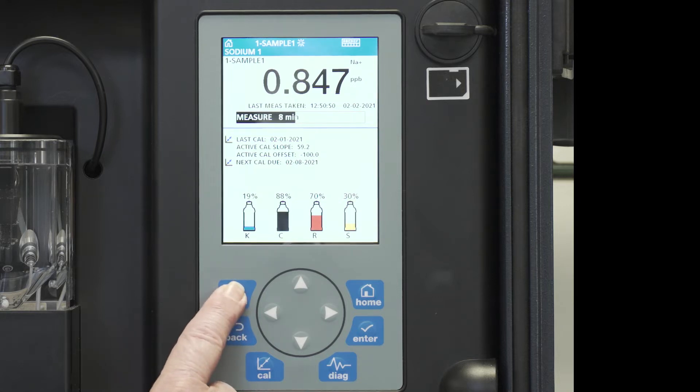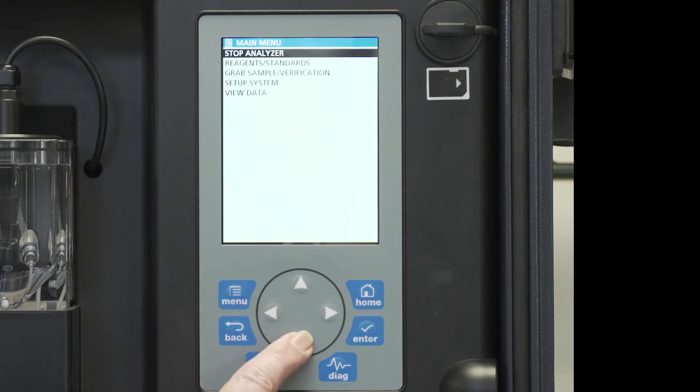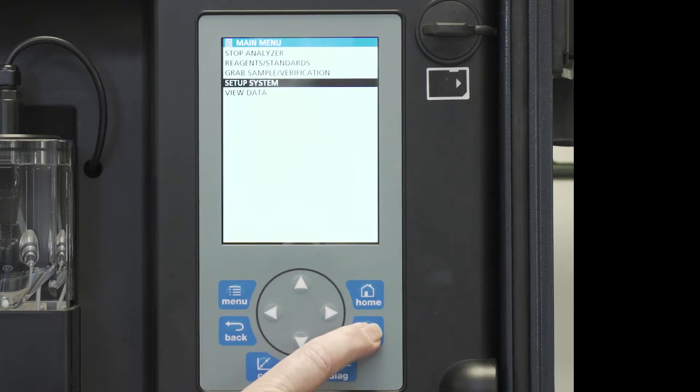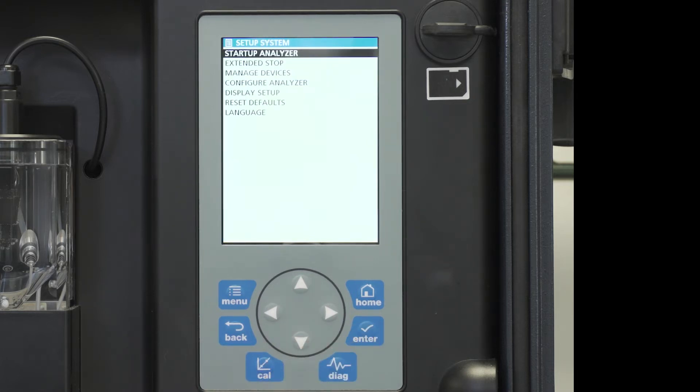We will go to menu and scroll down to system setup. Press enter, move down to configure the analyzer.